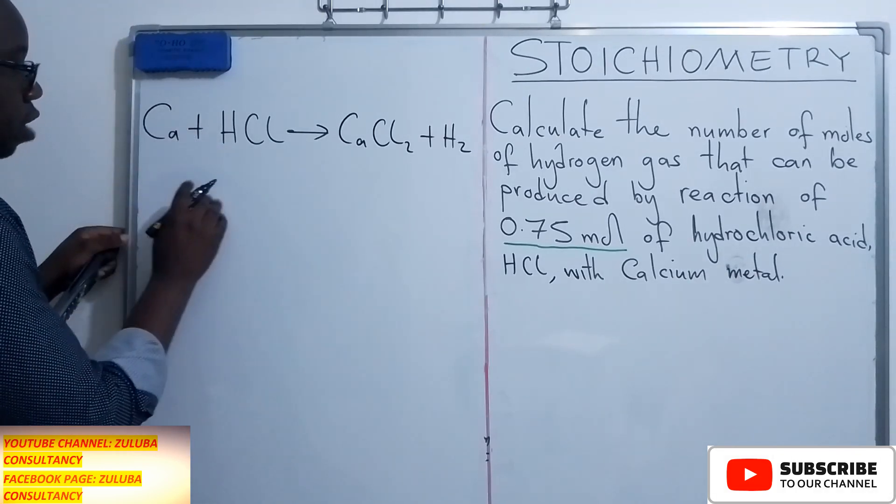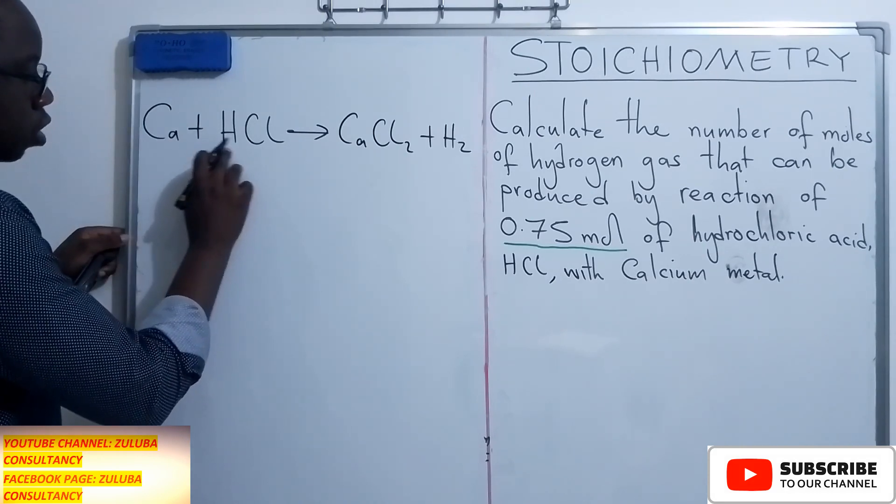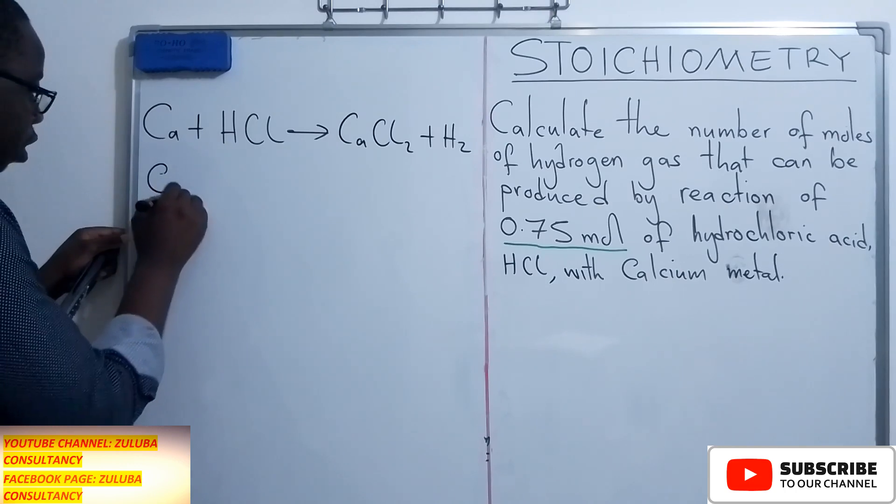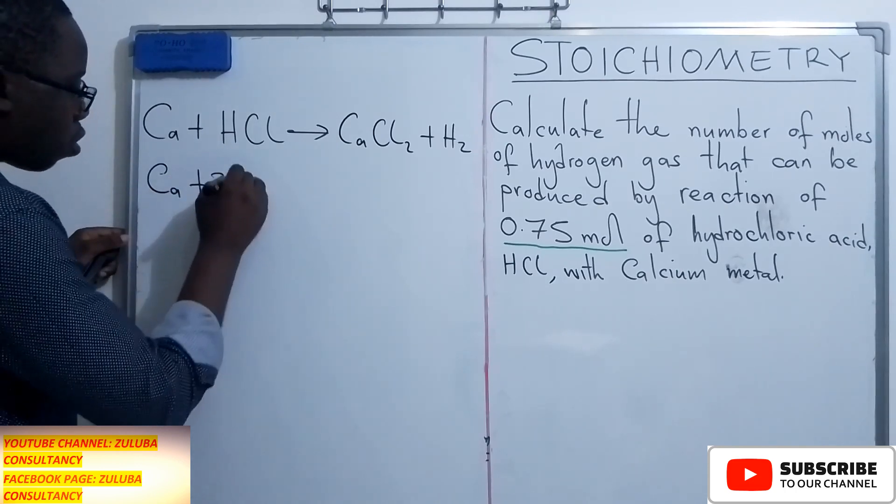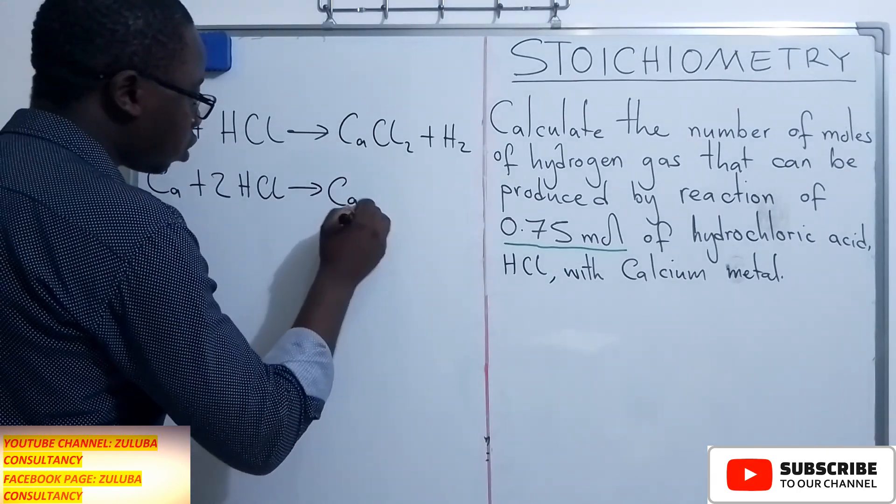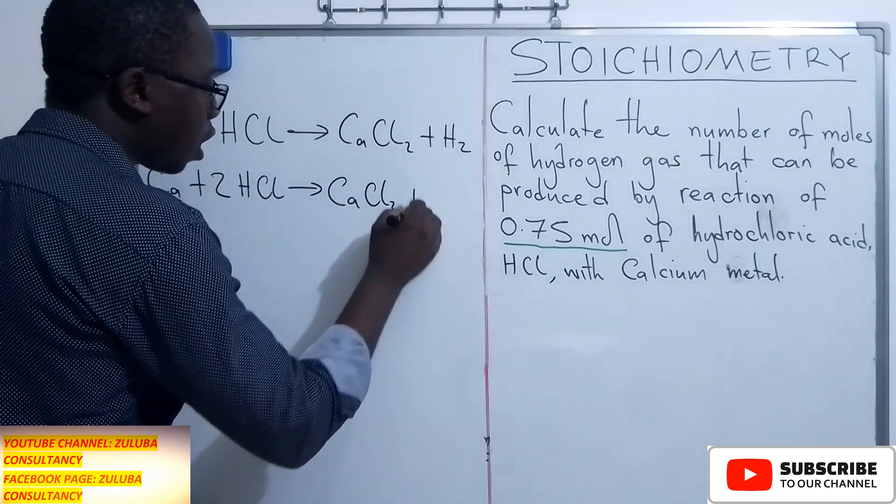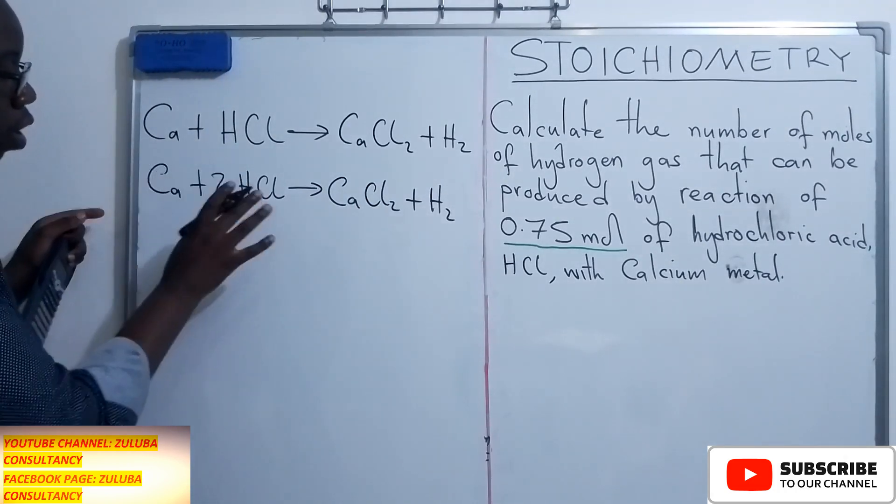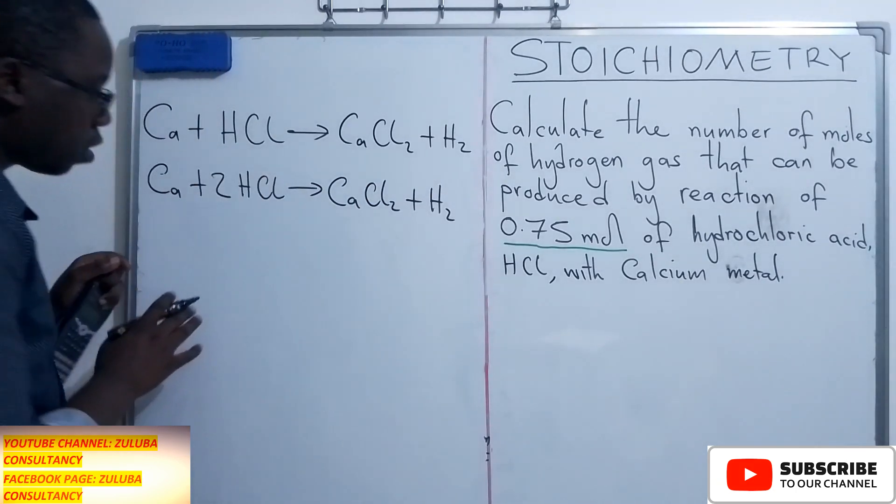How do we balance it? It is by introducing 2 on the acid. So we have calcium plus 2 moles of the acid, giving us calcium chloride and hydrogen gas there. So this is how we have managed to balance.